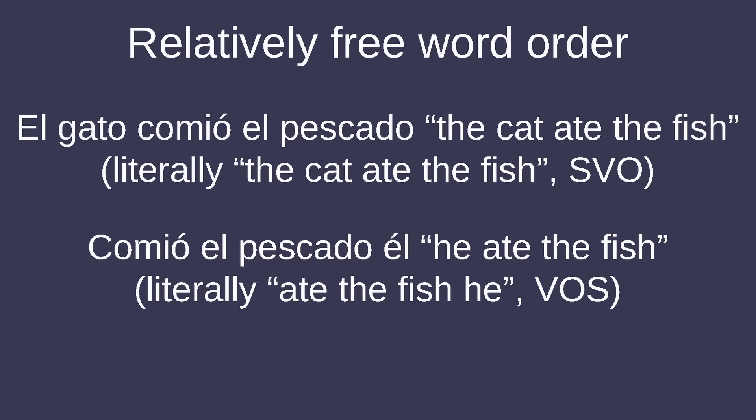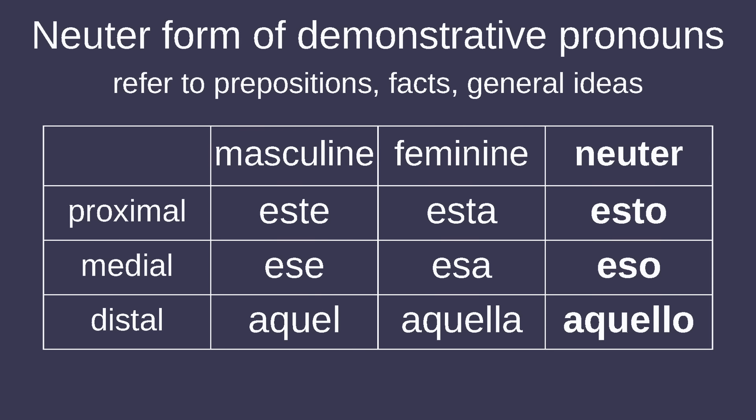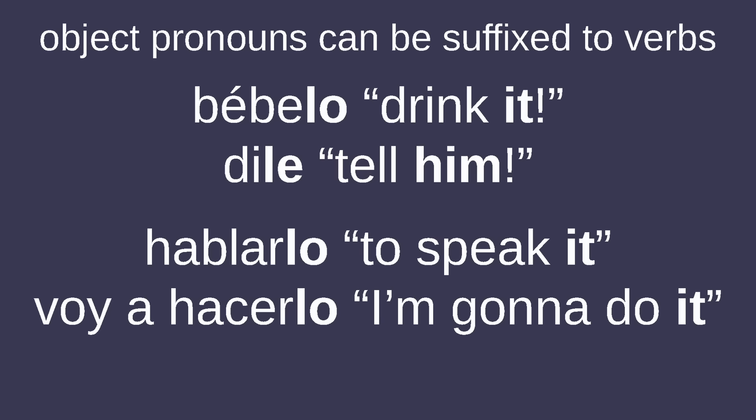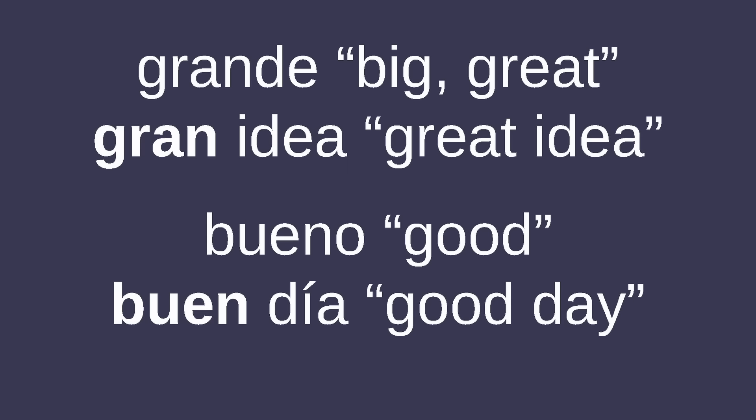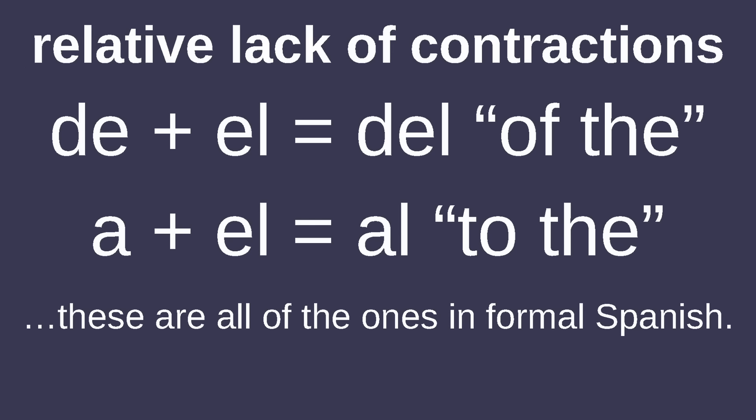Spanish word order is relatively free with regards to pronouns, with verb-object-subject sentences being pretty common. While possessive pronouns inflect for gender and number, possessive determiners only inflect for number and are much more common. Third-person possessives are neutral with both the person and number of the pronoun itself, with unstressed 'su' and stressed 'suyo.' Demonstrative pronouns have a designated neuter form which refers to prepositions, facts, or general ideas, and both direct and indirect objects can be suffixed to verbs in their infinitive forms and with imperatives. A few adjectives have shortened forms used directly before nouns, such as 'grande' shortening to 'gran' and 'bueno' shortening to 'buen.' Most Latin American Spanish dialects have no separate second-person plural conjugation.